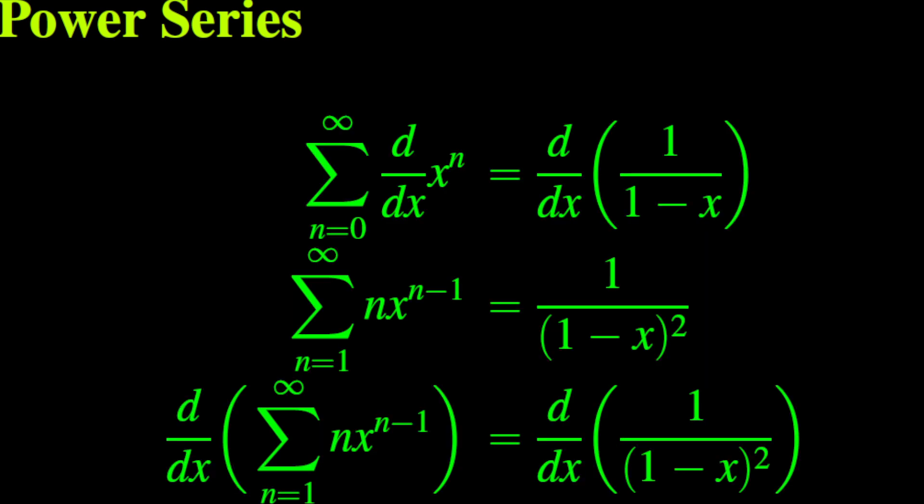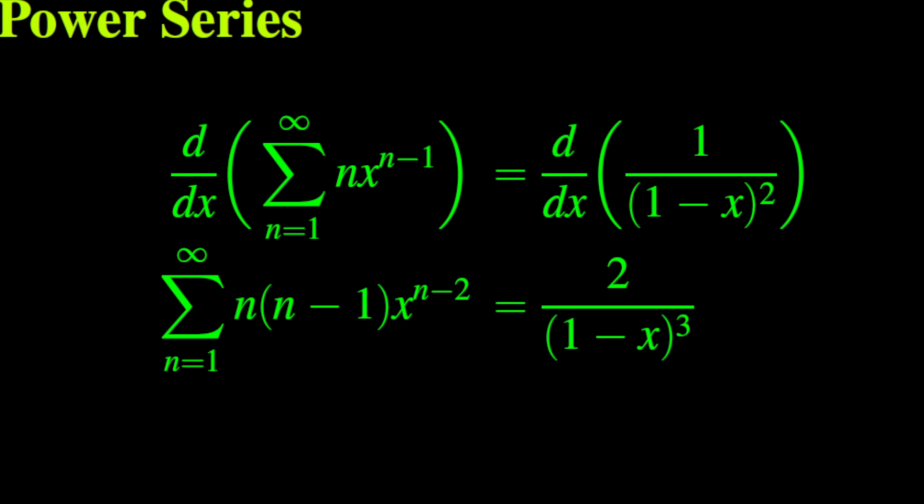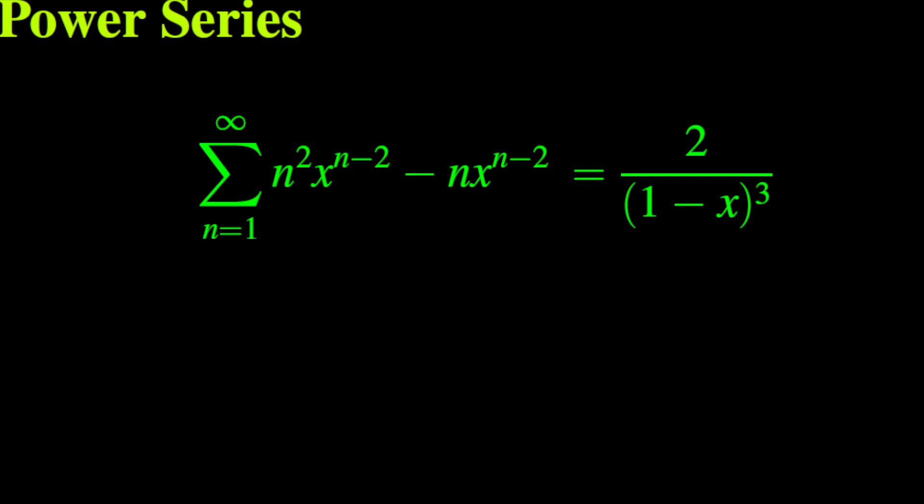Similarly, taking the derivative of the series with terms n times x to the power n minus 1 equals the derivative of 1 over (1 minus x) squared. Expanding n times (n minus 1) times x to the power n minus 2 gives n squared times x to the power n minus 2, minus n times x to the power n minus 2. This implies that the series with terms n squared times x to the power n minus 2, minus n times x to the power n minus 2, converges to 2 over (1 minus x) cubed.